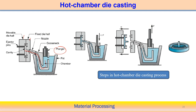Once solidified, the component is removed, and very complex shapes can be produced in die casting. We have to control cooling by making cooling channels throughout the cavity. The die material is costly, so the process has a higher cost, but the production rate is very high and very complex shapes can also be produced.